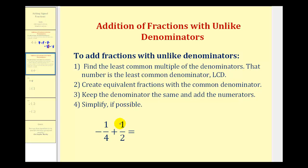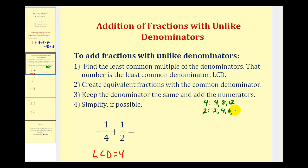For negative one-fourth plus one-half, the first step is to determine the least common multiple of two and four, which is the smallest number divisible by both four and two. We can list multiples of four and multiples of two. Notice that four is the smallest common multiple that four and two share, so we want to write both fractions with a denominator of four.